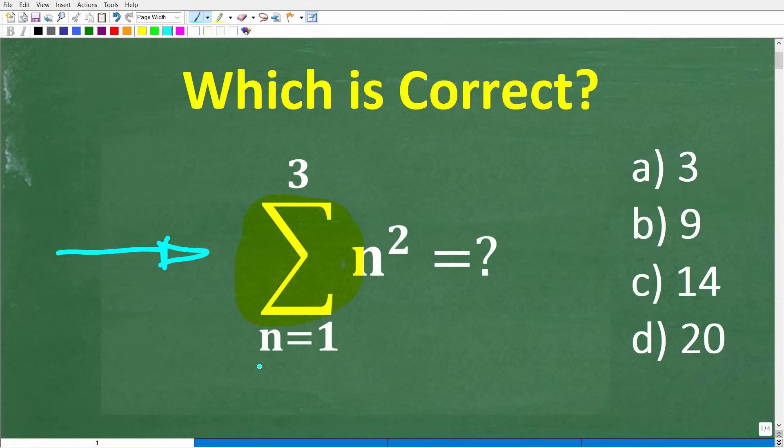But what do you think this could possibly mean? So we have this symbol, and I'm not going to tell you what this means right now, but we have this symbol, n is equal to 1, we have a 3 up here, and then we have n squared.